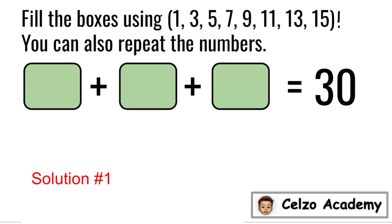Here's our first solution. For the first box, I will write the number 13. The second box, I will write the number 11. 13 plus 11 is 24, so this means that the third number should be a 6 to get a sum of 30.